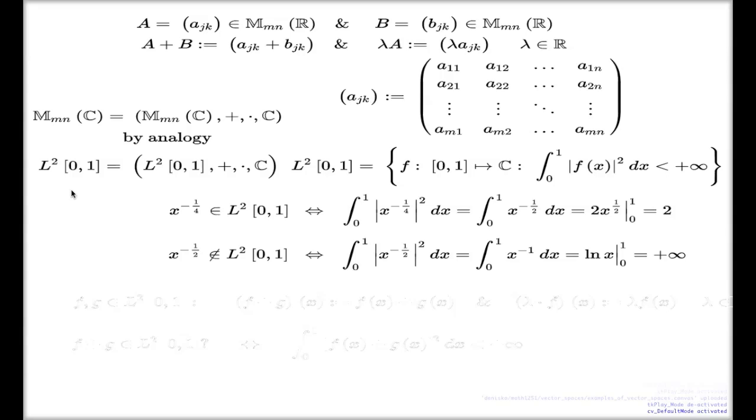If you try to apply that or check or test that axiom with the four examples before this example, with the n-tuples of reals, n-tuples of complex, matrices, it seems very obvious. If you add two n-tuples it will be another n-tuple. However, here it's no longer so obvious.